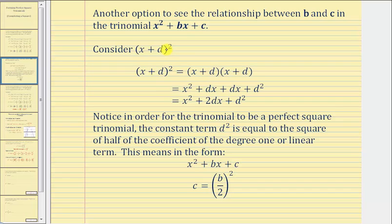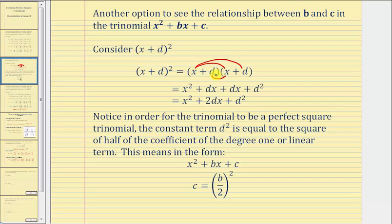The quantity x plus d squared equals the product of x plus d times itself. Multiplying this out gives four products: x times x equals x squared, plus x times d equals dx, plus d times x equals dx, and plus d times d equals d squared. We have two like terms: dx plus dx equals 2dx, which means x squared plus 2dx plus d squared is a perfect square trinomial.